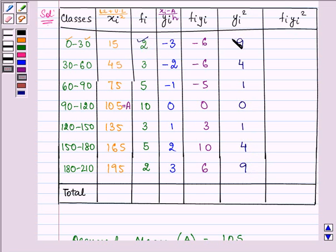And now again multiply the frequency with yi square. So it will be 2 multiplied by 9 which gives us 18. Then 3 multiplied by 4 is 12. 5 into 1 is 5. 10 into 0 is 0. 3 into 1 is 3. 5 into 4 is 20. 2 into 9 is 18.